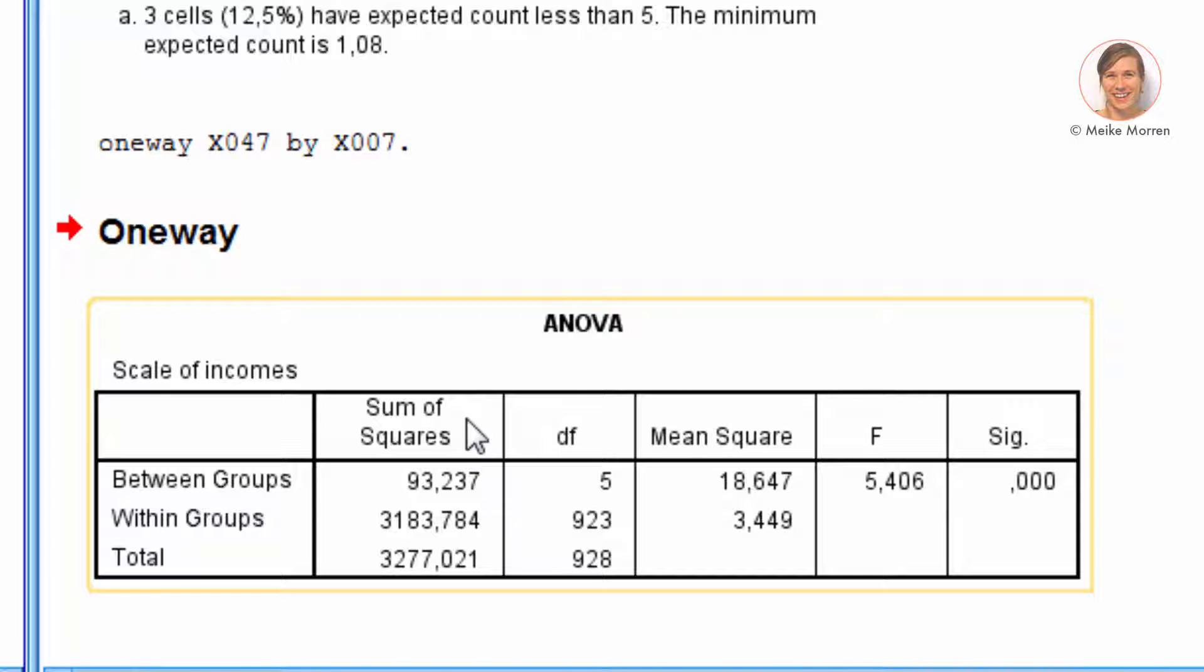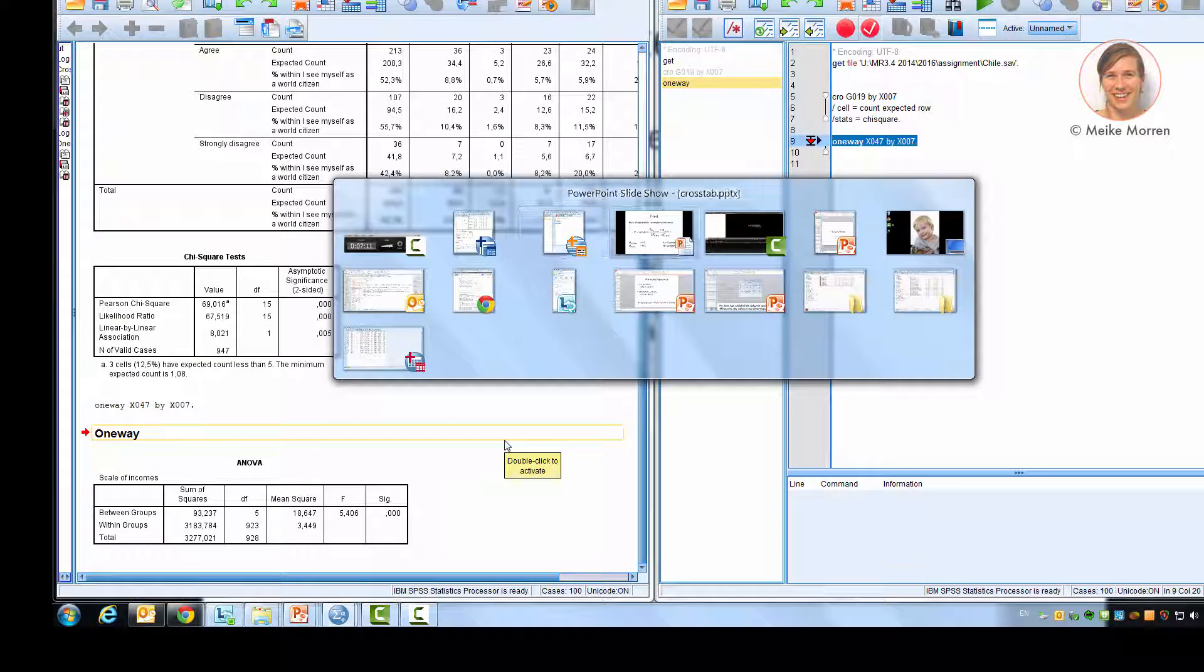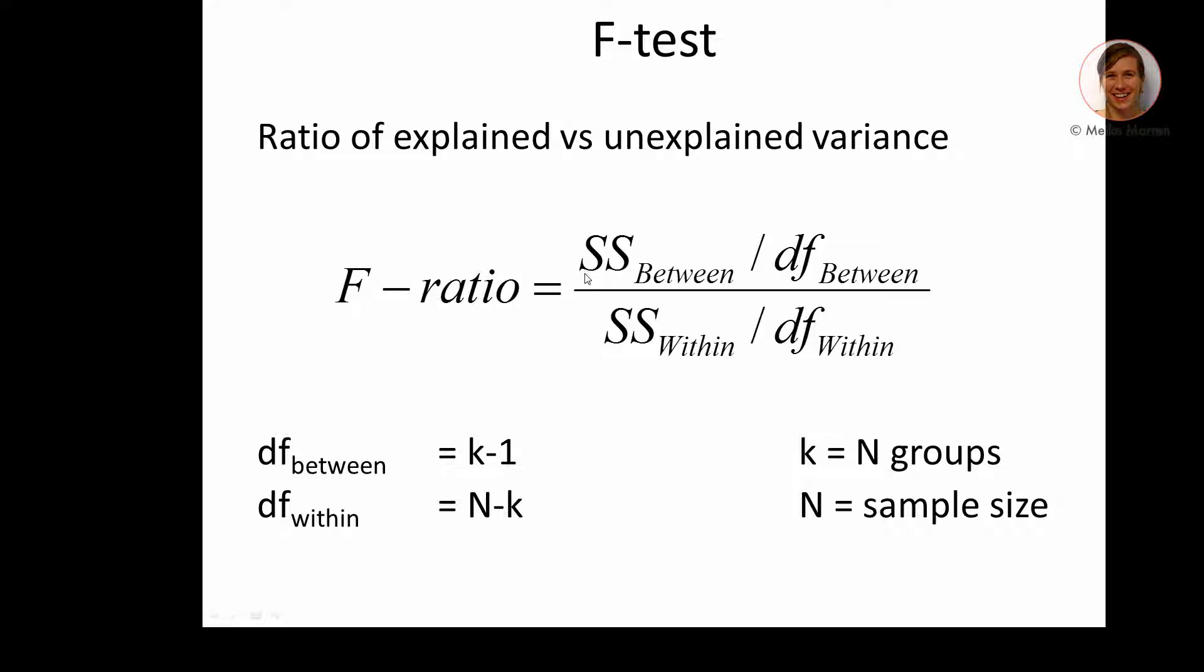So here we see the ANOVA table. The ANOVA table depicts the sum of squares of the between group variance and the within group variance, and the F value with the significance value next to it. So let's go to the formula. The formula of the F-ratio. The F-test is usually interpreted as the ratio of the explained versus the unexplained variance. Now, what do you really want to know with an F-test? You want to know whether the differences between groups are larger than the differences within groups. So that's actually what you compare. You compare the differences between groups, the sum of square errors, with the sum of squared errors within groups. Now, the degrees of freedom are different for between groups and within groups. It depends on the number of groups or the sample size versus the number of groups.